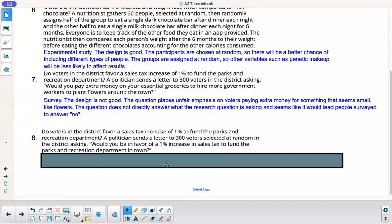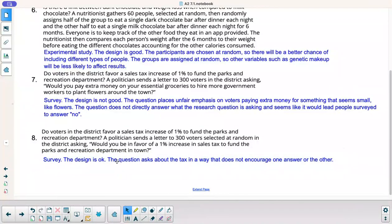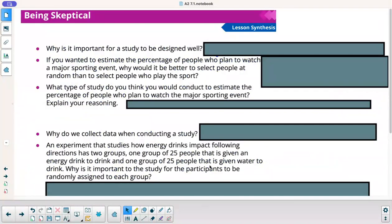Number eight. Do voters in the district favor a sales increase of 1% to fund parks and recreation department. Same question. Politician sends a letter to 300 voters selected at random in the district asking, would you be in favor of 1% increase in sales tax to fund the parks and recreation department in town? Survey. That's an okay design. It asks directly what you're seeking, and it doesn't try to encourage one answer or the other. You've got to be careful if you're leading the survey participant to respond a certain way.